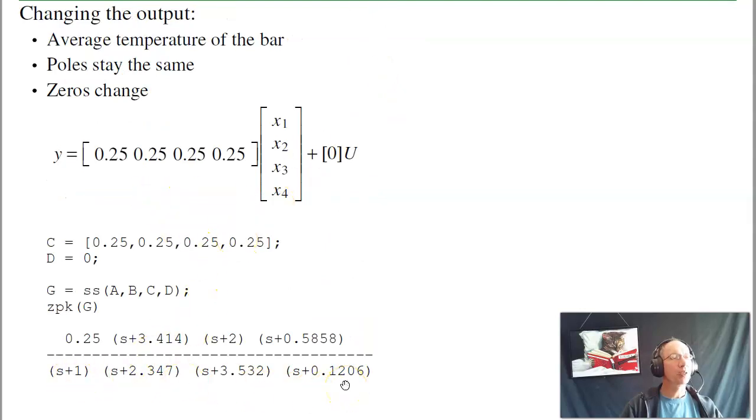When you change the output, the poles stay the same. Poles are energy. I've got energy in the system, and it's decaying in some way. The poles tell you how the energy decays. If I change where I put the sensor, the energy doesn't care. What the zeros tell you is how those energy states add together to give you the output.